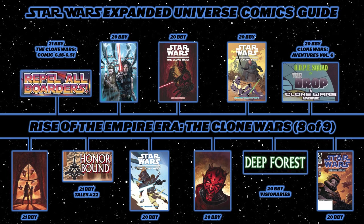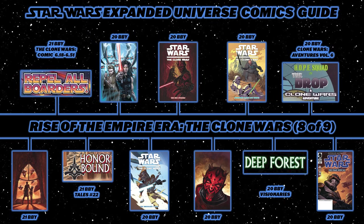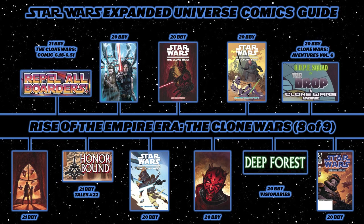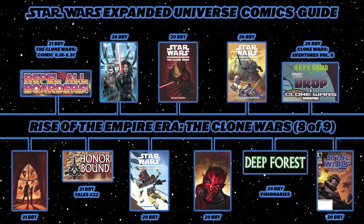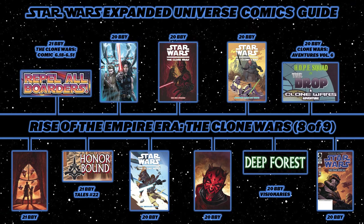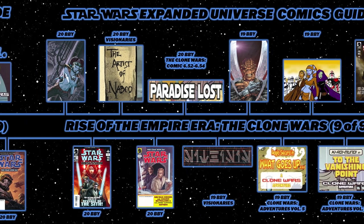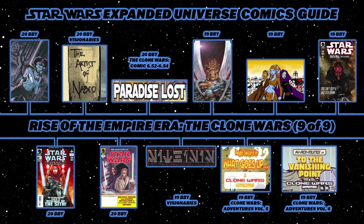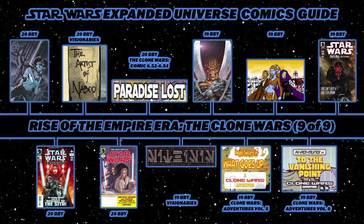Then from Star Wars Visionaries, Deep Forest. Back to Clone Wars Adventures Volume 6 for The Drop. Then the 2006 free comic book day issue Star Wars: Routine Valor, following Commander Cody and the clones during the Battle of Sarish. Back to Republic for Trackdown, issues 72 and 73. Then the miniseries Star Wars: Obsession, following Obi-Wan and Anakin as they hunt down Asajj Ventress.